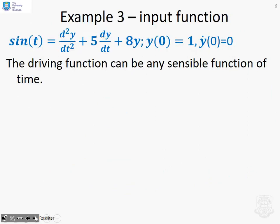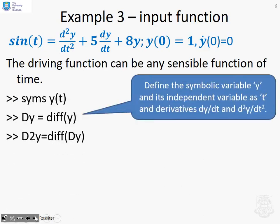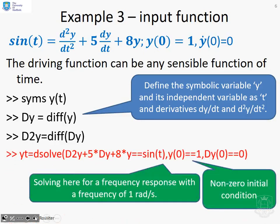Example 3. This example is to show that the input function doesn't need to be 1. So here you'll notice we've put sin(t) = d²y/dt² + 5 dy/dt + 8y. So this is a bit like a frequency response. So again you start by defining all your symbolic variables y, dy, and d2y, and then as before you just plug the equation straight in.